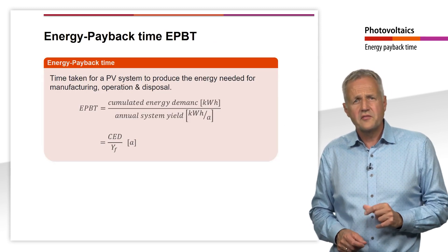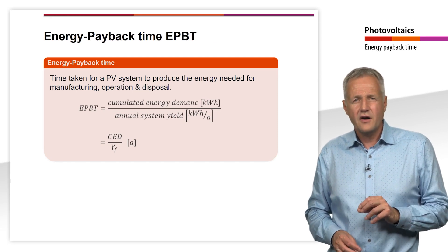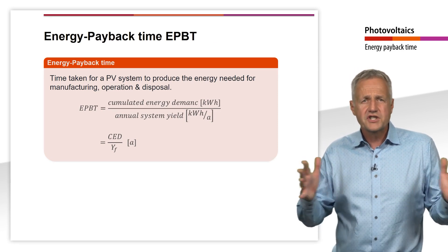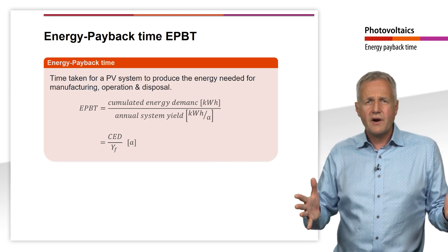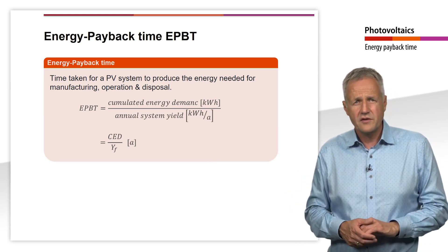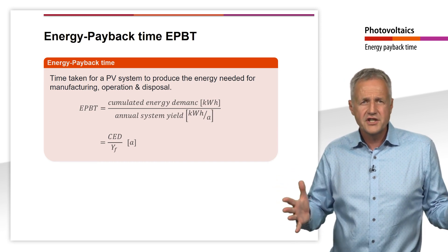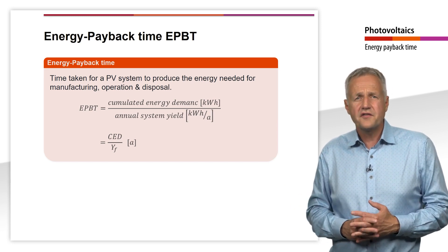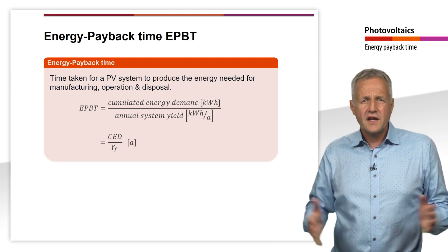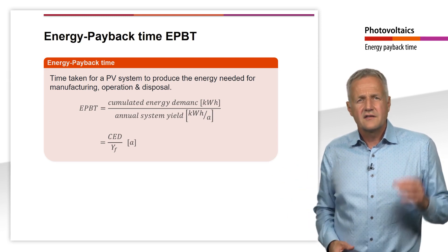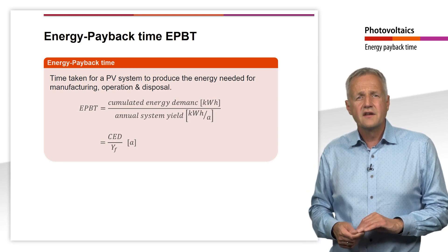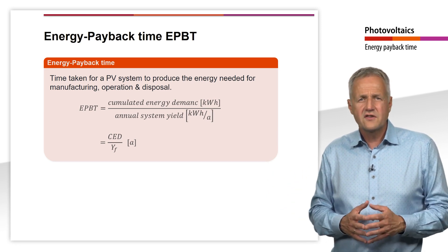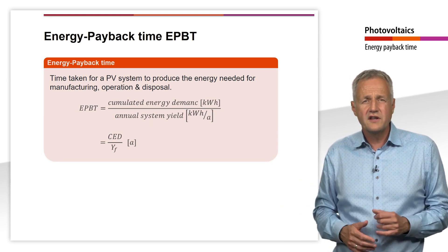A frequently used measure of the environmental impact of a PV system is the energy payback time, E-PBT. The energy payback time is the time in which a PV system has produced the energy required for production, transport, operation and disposal. Mathematically, it corresponds to the ratio of the cumulative energy demand in kWh to the annual yield of the system in kWh per year. The unit of energy payback time is thus years. The greater the annual yield of the plant, the smaller the energy payback time. A small energy payback time means the plant has produced the energy needed for its production, operation and disposal in a shorter time.